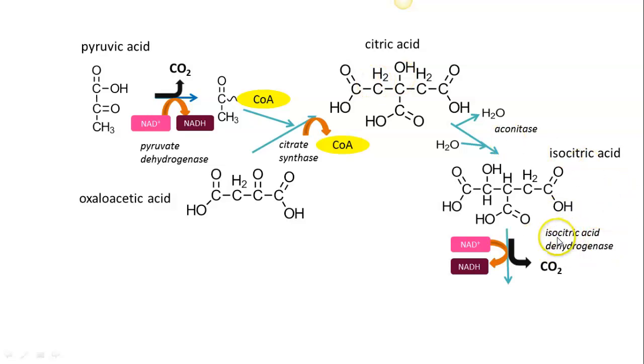Next we have isocitric acid dehydrogenase, which is going to take the hydrogen off. It's going to hydrogenate NAD to NADH, and at the same time we're going to get a carbon dioxide driven off. As the carbon dioxide is driven off, we get the formation of alpha-ketoglutaric acid. This is a five-carbon unit and this becomes very important because we will see that this is also a precursor of other molecules in other pathways.